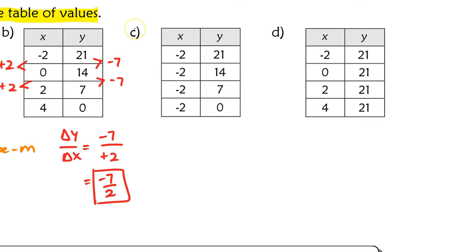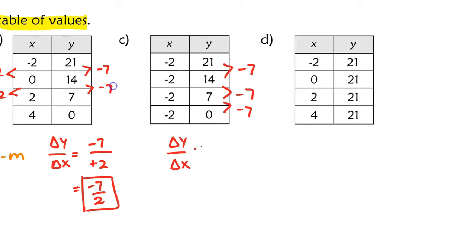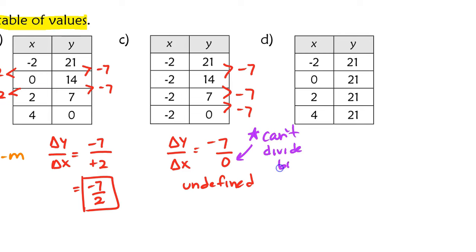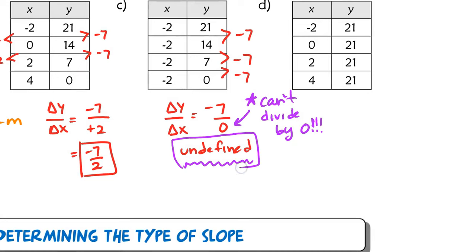In the next example, it's a special case. The x values are not increasing or decreasing — the change in x is 0. The y values are decreasing by 7. When I do change in y over change in x, I get negative 7 over 0. If you try to type that in a calculator, you get an error message because this is undefined — we can't divide by 0. So instead of writing a fraction, we write that the slope is undefined.